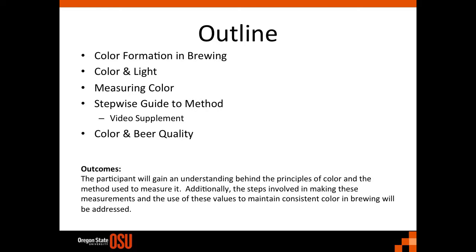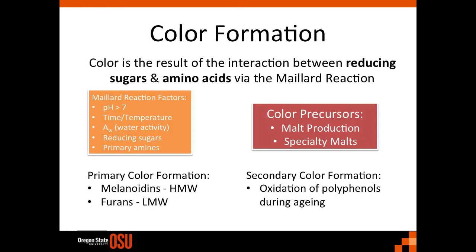Additionally, the steps involved in making these measurements and the use of these values to maintain consistent color in brewing will be addressed. Color formation in the process starts early on during malting, where color precursors are developed during germination and kilning. Color is mainly the result of interactions between reducing sugars and amino acids via the Maillard reaction.